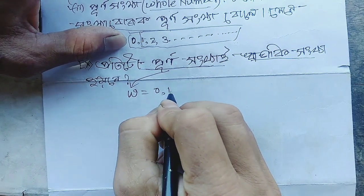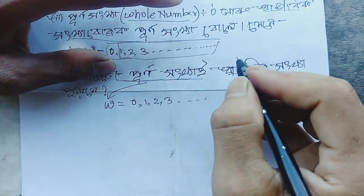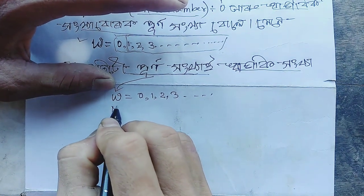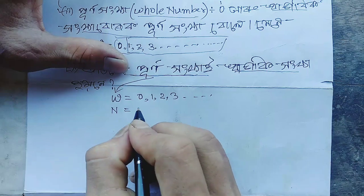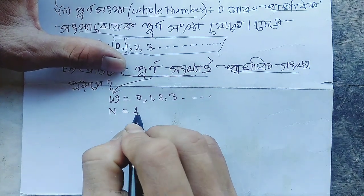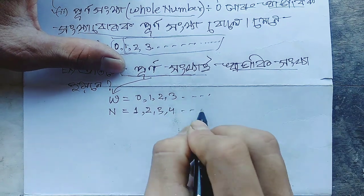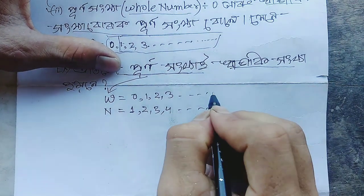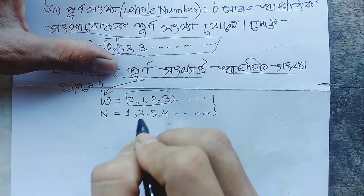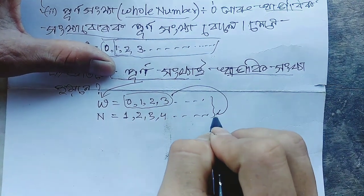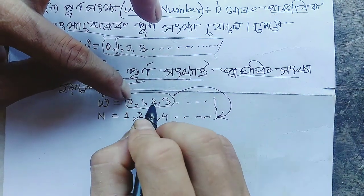0, 1, 2, 3... Next, 1 to n is called N number, and N number. And it is compared from zero to onward. It is called whole numbers. Zero, one, two, three.